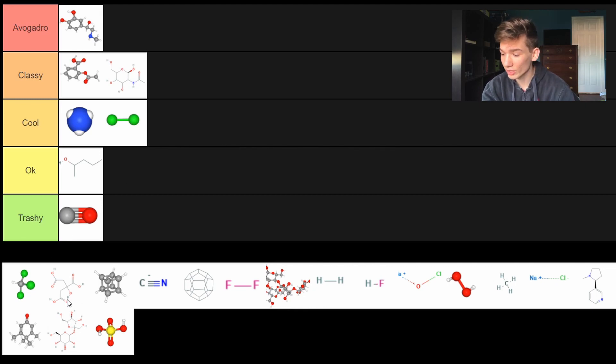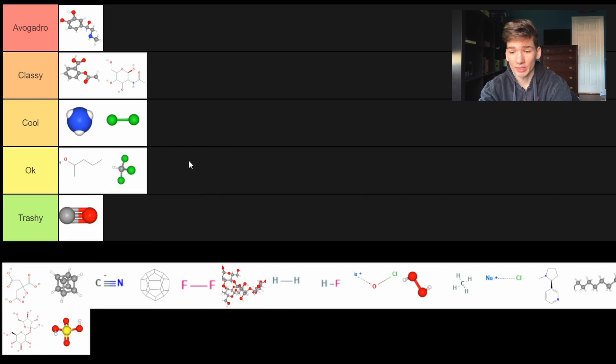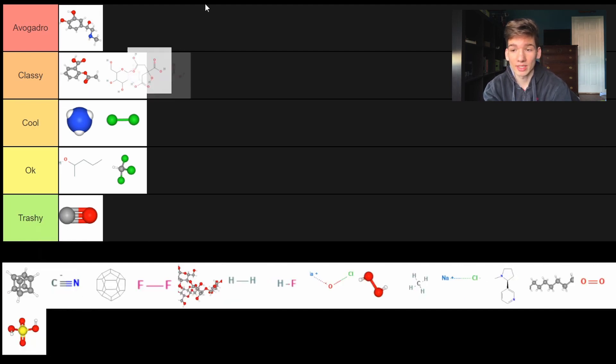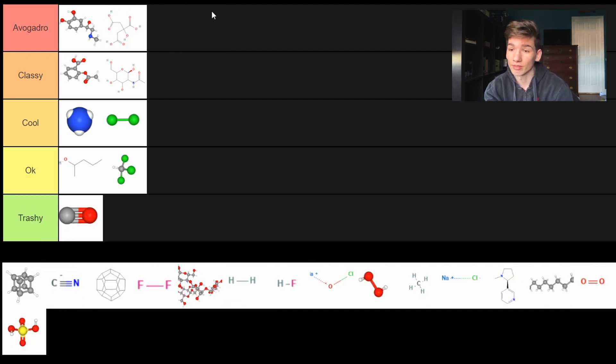Chloroform, also known as Trichloromethane. This is what's used in movies to knock people out. I'm gonna say it's okay. Next we have good ol' citric acid. Vitamin C. Prevents you from getting scurvy. Makes things taste really good. Natural preservative. Avogadro.